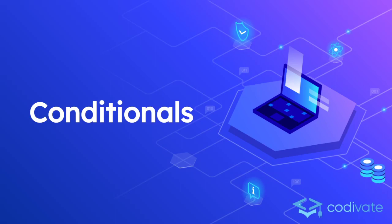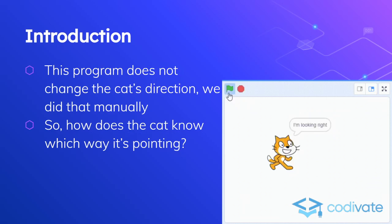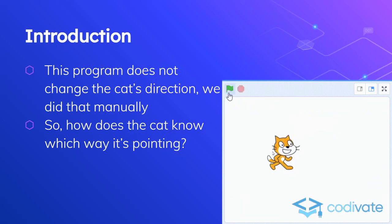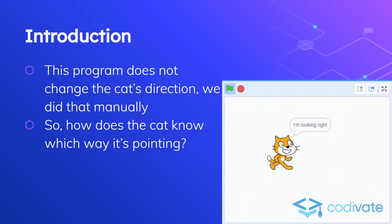Hello and welcome to Block-Based Programming in Scratch by Cotevate. This is lesson 5. Today we're going to talk about conditionals. Before we actually talk about what conditionals are, let's take a look at this program. When the cat looks to the right and you click the green flag, it says 'I'm looking right.' But when it's looking to the left, it says 'I'm looking left.' Somehow this cat knows which direction it's facing, and the way it's doing that is through conditionals.